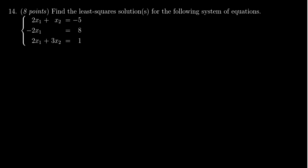The system is: 2x₁ plus 2x₂ equals negative 5, negative 2x₁ equals 8, and 2x₁ plus 3x₂ equals 1.